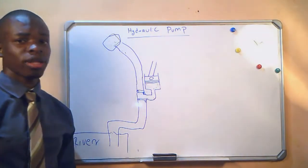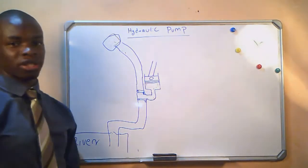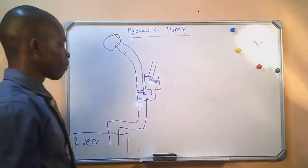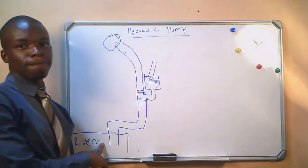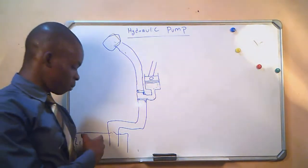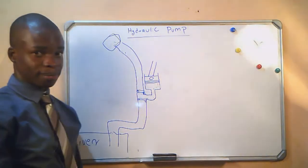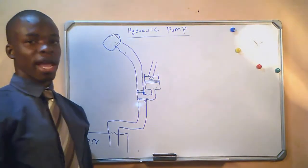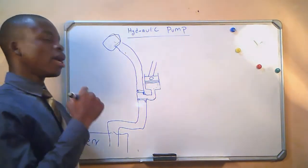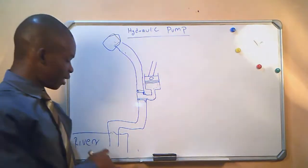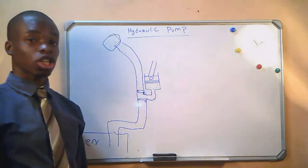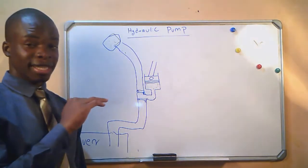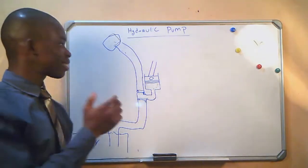The structure that you see on the board is the basic illustration of what we are using a hydraulic pump for. We have a river and we want to transmit the water from this river to a destination. We have a main line which is where the water will be traveling, and to make sure that this water travels in one direction it can either be horizontal, vertical, or against pressure.